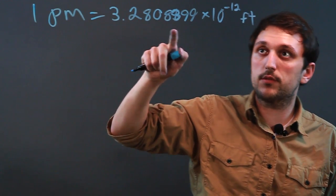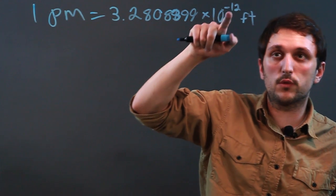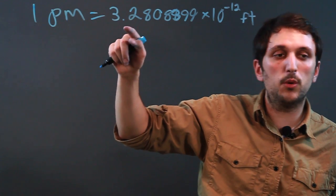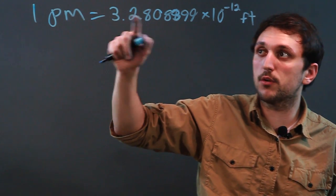And the reason we say this, the 10 to the negative 12 equals one trillionth, and all these numbers are actually the normal metric conversion from meters to feet.